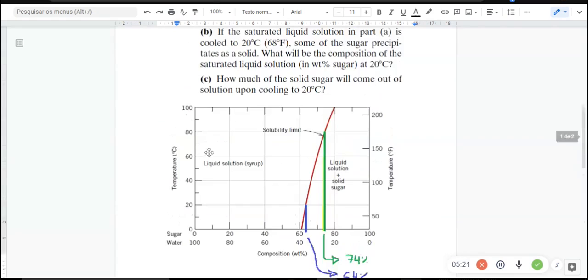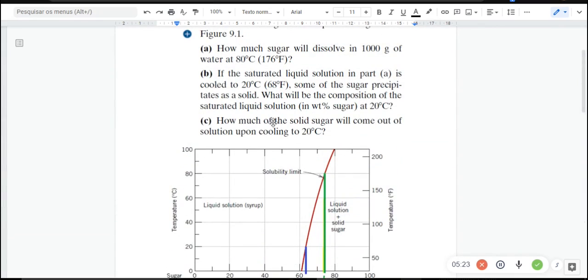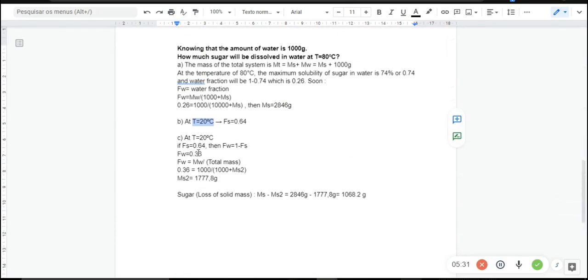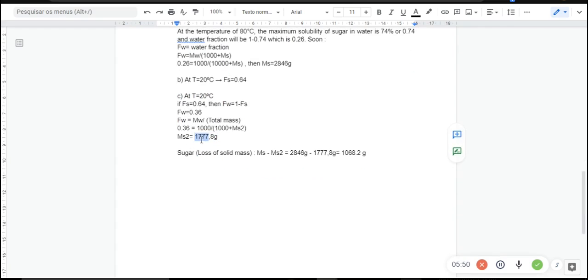The last question is, how much of solid sugar will come out of the solution upon cooling to 20 Celsius degrees? All we have to know is the new mass of sugar for this new temperature. Solving this problem, we can see that this new mass of sugar will be this value, this new value.